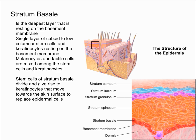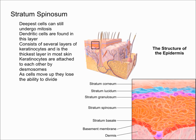The stratum spinosum is where most of the keratinocytes are. The stem cells divide to replace the lost epidermal cells, and they are constantly dividing and making new keratinocytes, which is why your skin is always regenerating itself and creating a new layer.